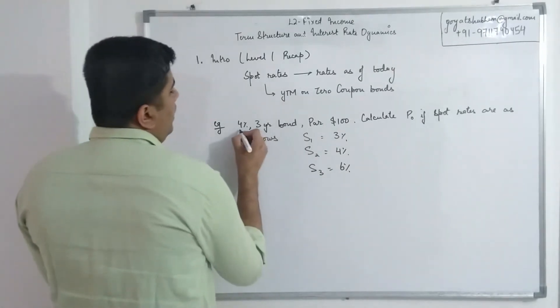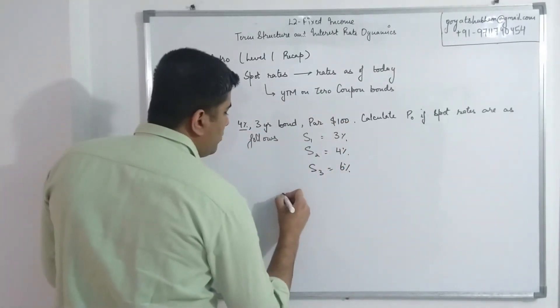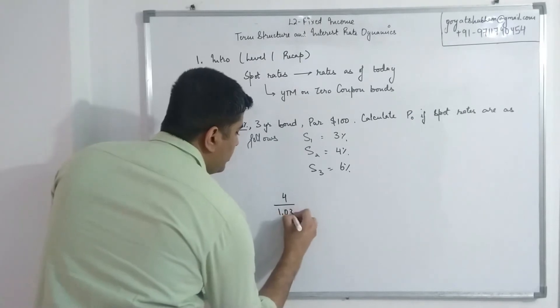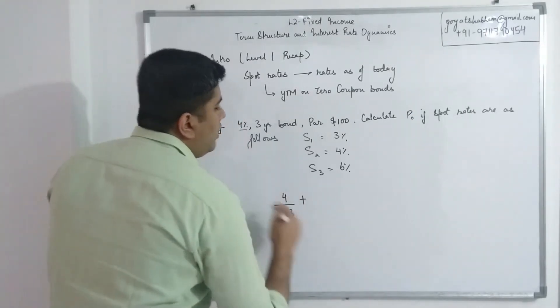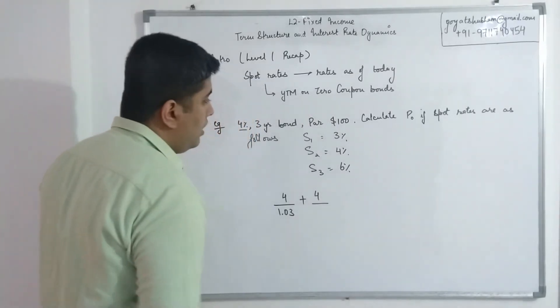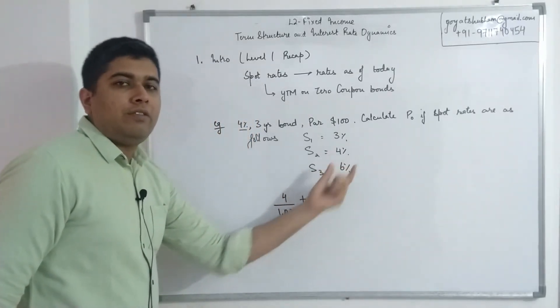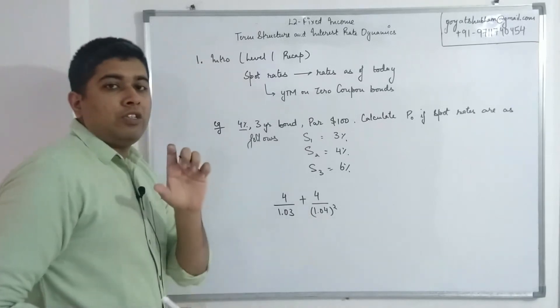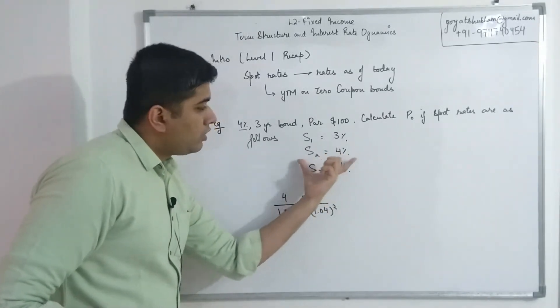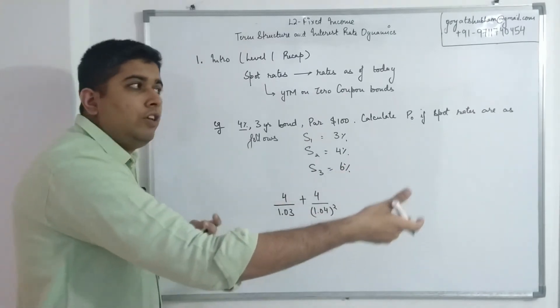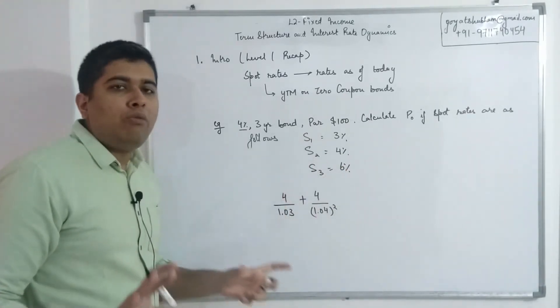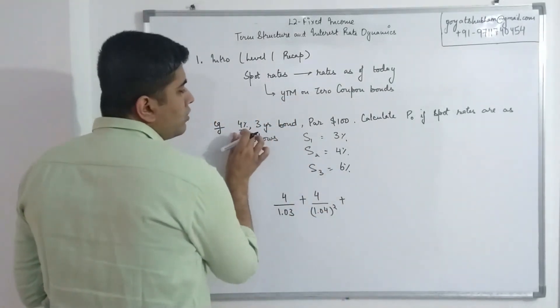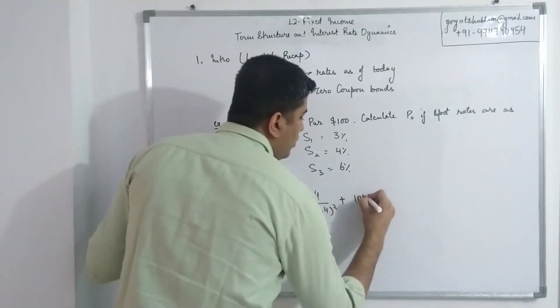So in order to do the valuation, I have 4% coupon on a par of 100. So first year I am going to receive $4 - this is first year's cash flow. I'll discount it using the spot rate for first year: 1.03. Second year again I'll earn a coupon of $4, but this time I'll discount it using spot rate for two years, so this would be 1.04 squared. Now 'squared' is very important because at the end of the day these are per annum rates. This is a two year spot rate, which means you are investing for two years, so you have to discount it for two years. This 4% is always per annum.